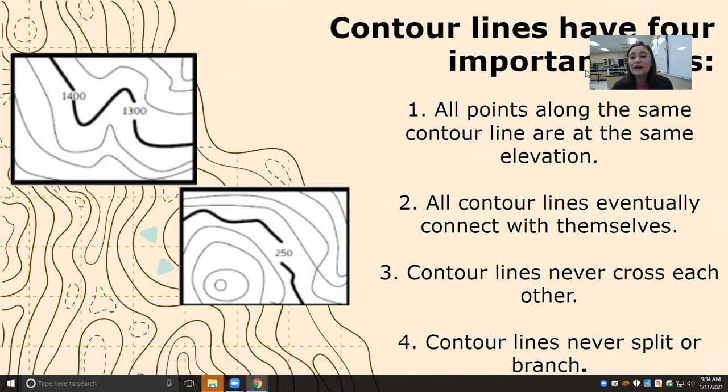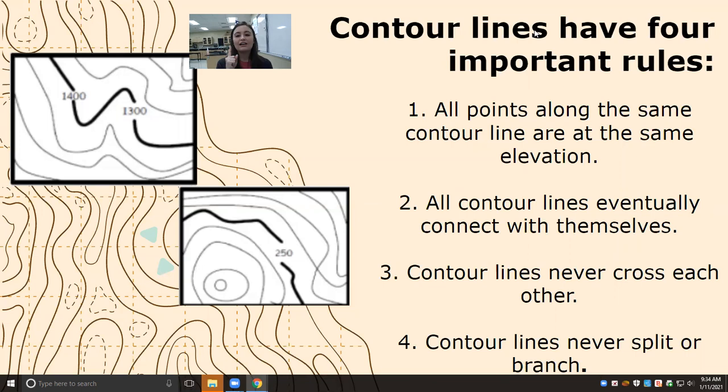Contour lines have four important rules. The first one: every single point along a contour line represents the same elevation. So if we look right here, we have two different elevation measurements on the same contour line — that is telling you this is not correct. It needs to be either 1400 or 1300, but it cannot be both.